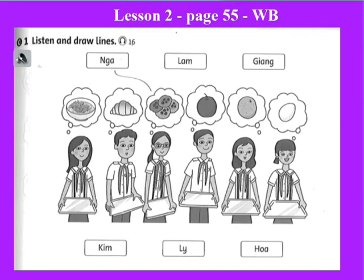Now we continue. Two: So where is your friend Lum? Lum is having an apple. He likes healthy food. Yes, an apple is a good choice. Three: Kim chooses healthy food too. She's having an orange.